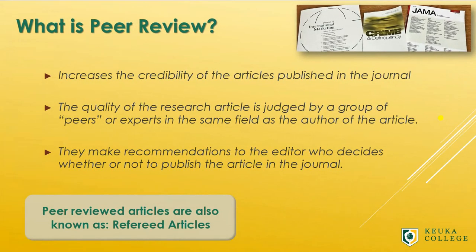But what does peer-review mean exactly? Peer-review is a process the editor of the journal uses to increase the credibility and trustworthiness of the articles they publish. They appoint a committee of people who are experts in the same subject area as the authors — hence, they are called peers. This committee reads the article submissions and judges the quality of the research. Then they recommend to the editor whether or not to publish the article. Sometimes the article is sent back to the author for revisions first.